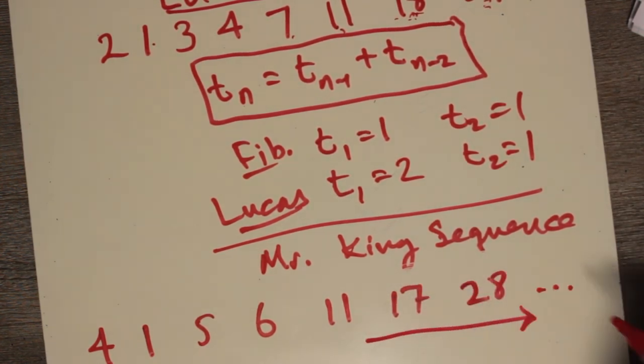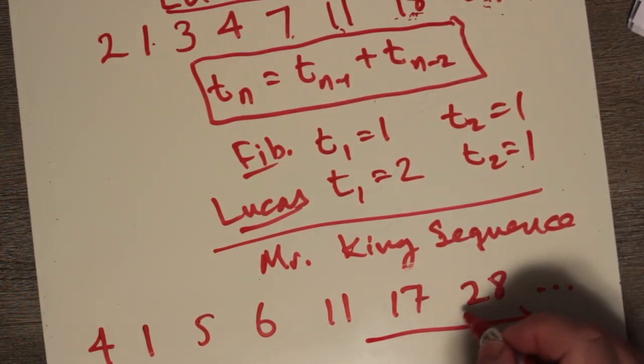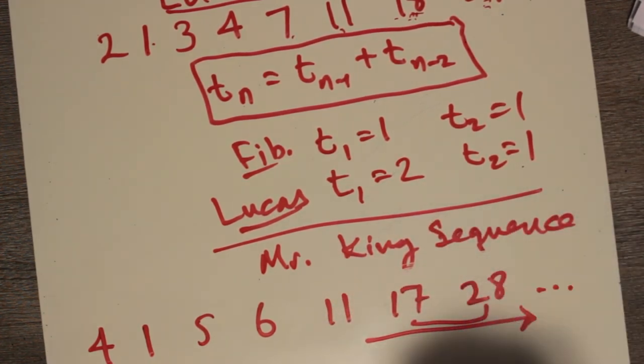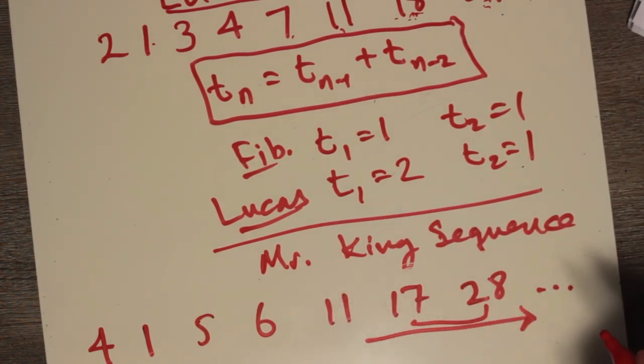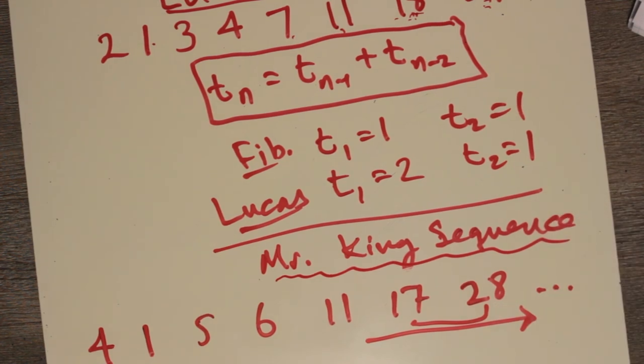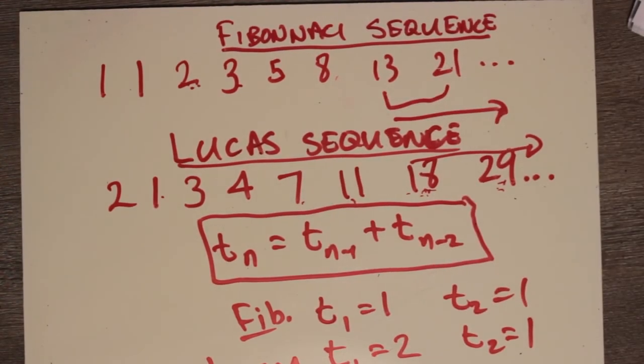And once again, you will get the golden ratio as you take any sequential numbers, two together. As you go further down the series, the ratio will get closer to the golden ratio. So this is the Mr. King sequence. I don't think I'll be quite as famous as either Lucas or Fibonacci.